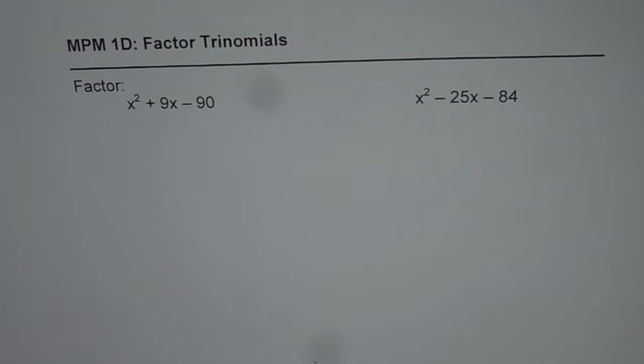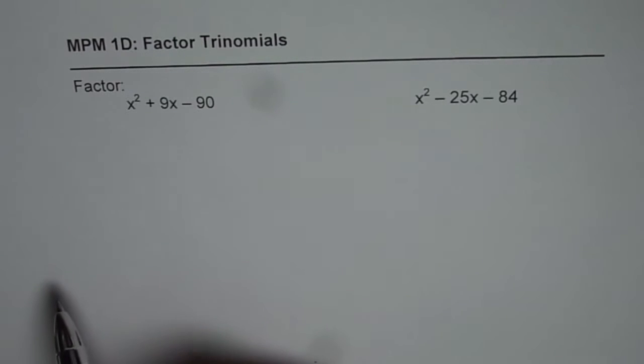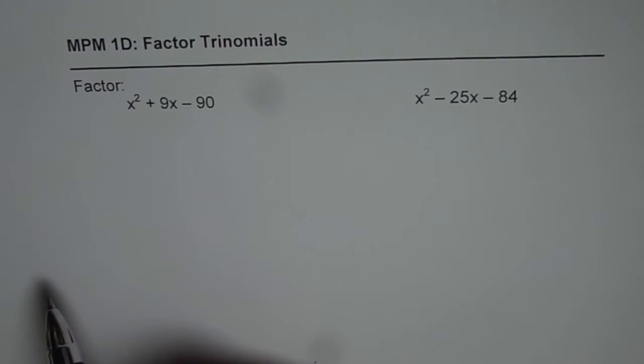Now the question here is to factor a trinomial we are looking for a set of numbers whose product is the constant term and whose sum is the coefficient of x. Now the question is how to figure out which number is positive which is negative and what is this positive negative combination. So we will try to understand that while answering these questions.